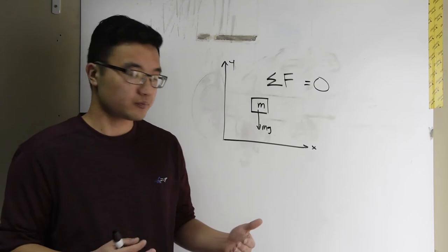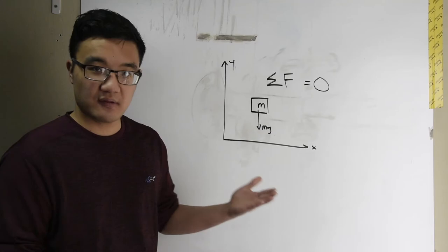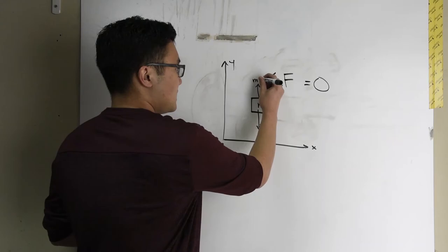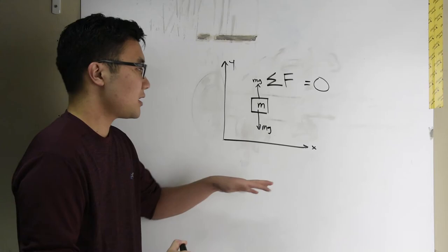So, this is quite simple. If I have mg acting downward in the negative y direction, I simply must have a different force, equal and opposite to mg, in the positive y direction. And now we are in static equilibrium. We're not moving.